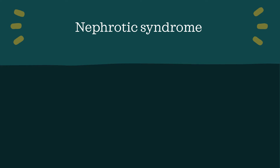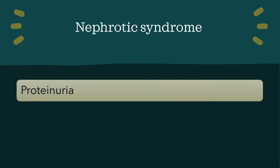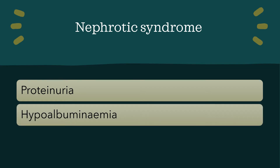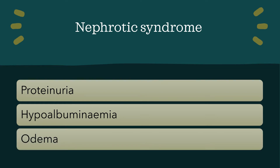Let's take a look at nephrotic syndrome. This is a syndrome with a triad of three characteristics. The first is proteinuria — in particular, more than three grams per 24 hours passed in the urine. The next requirement is hypoalbuminemia, meaning there is less than 30 grams per litre of albumin in the blood, and sometimes even as little as 10 grams per litre. Lastly, the effects of both of these processes result in oedema.